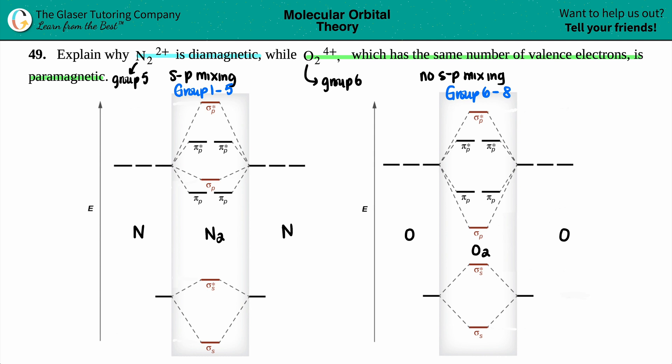So now let's just fill these up and we can actually see why N2²⁺ is diamagnetic and O2⁴⁺ is paramagnetic. So N2 has a total, if we look on the periodic table, since it's in group five, it has five valence electrons. So that means that I have to add five valence electrons on the left and right side. I got to start from the lowest energy and work my way up.